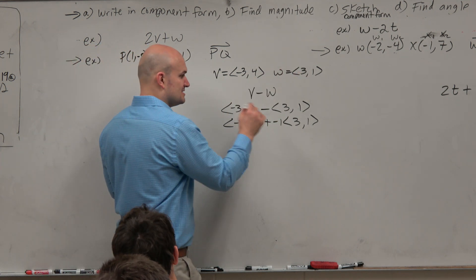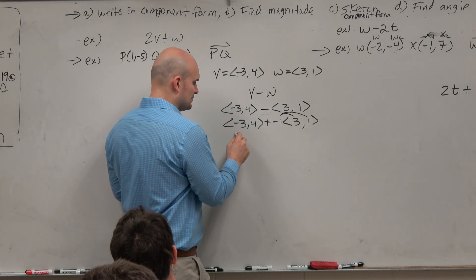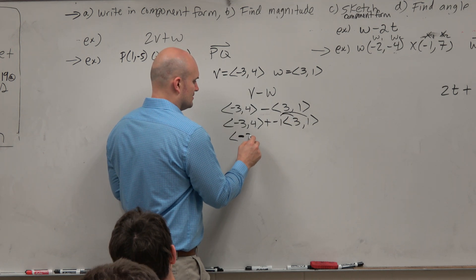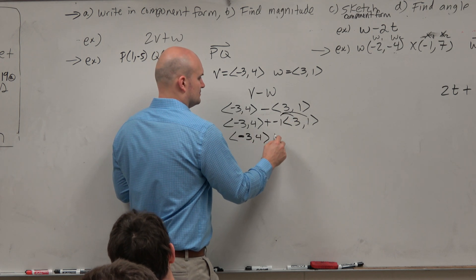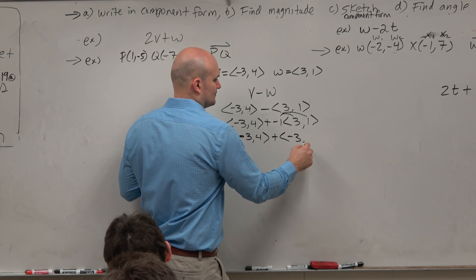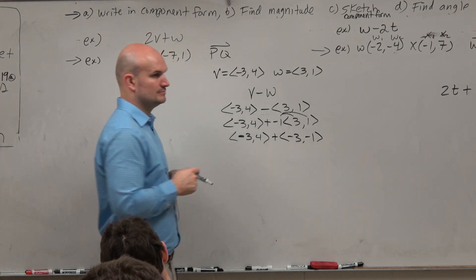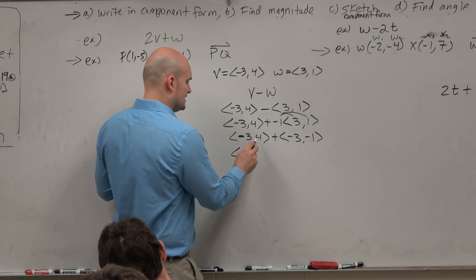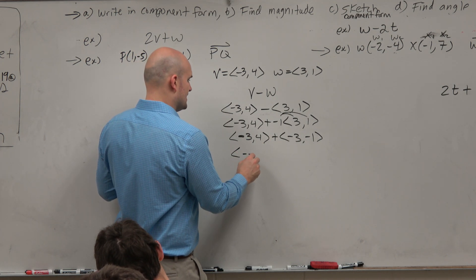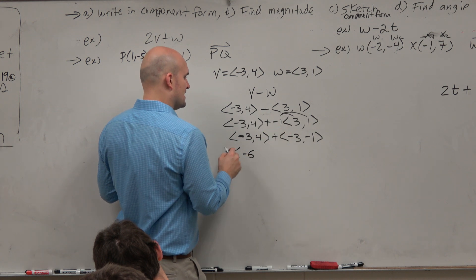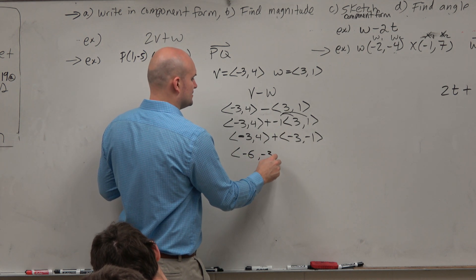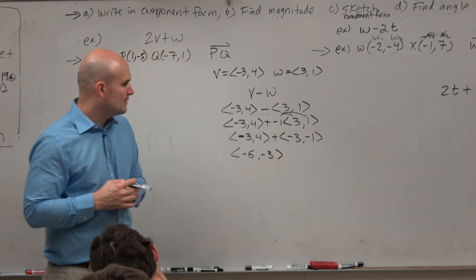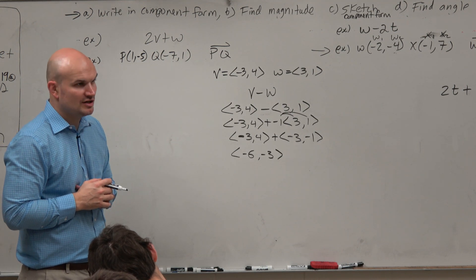Now I can apply the scalar multiple, which is basically just a distributive property. And now, based on my vector addition, you just add your components together. So negative 3 plus negative 3 is a negative 6. 4 plus a negative 1 is going to be a 3. And that is what we call our resultant vector, v minus w.